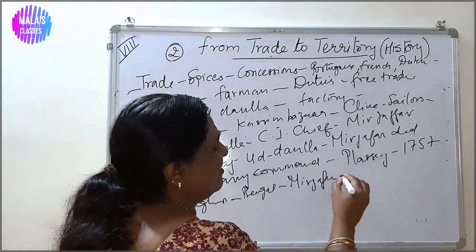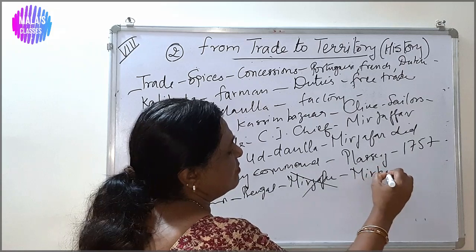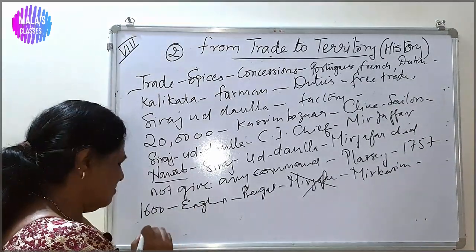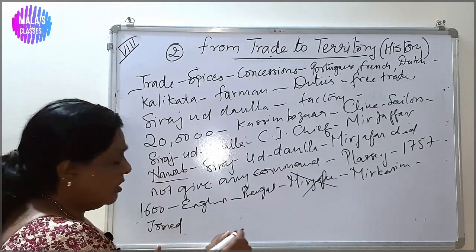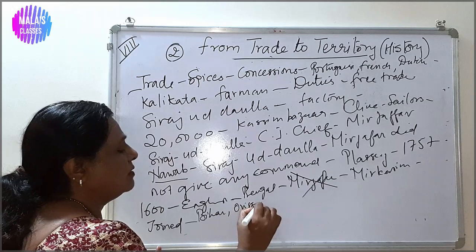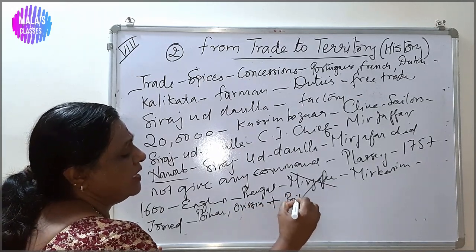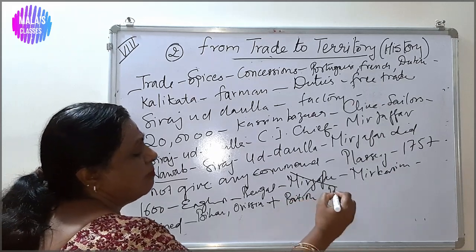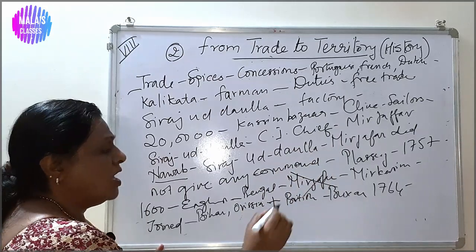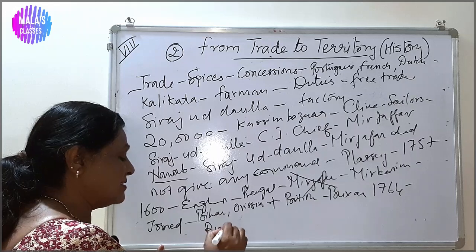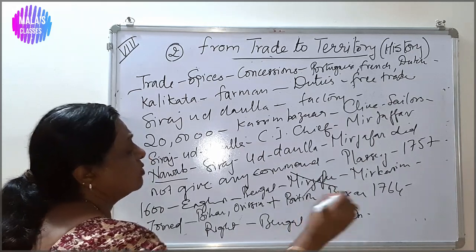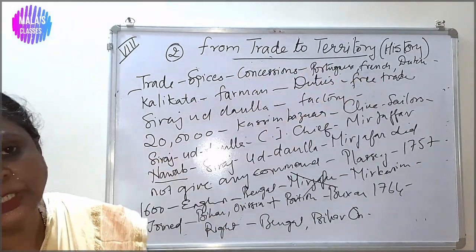When Mir Jafar stopped paying, the British were annoyed and replaced him with his son-in-law Mir Kasim. Mir Kasim did not want to empty his coffers either. He joined hands with Shuja ud-Daulah and Shah Alam — both controlling Bihar and a little of Odisha — and together they fought against the British. This was called the Battle of Buxar, which took place in 1764. All three were defeated. After that, the British got the right to collect taxes from Bengal, Bihar, and Odisha. That was how they moved from trade to accumulation of territory.